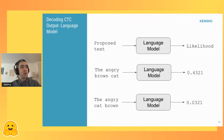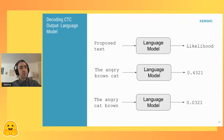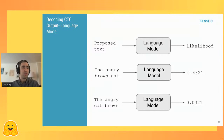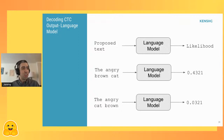An n-gram model is a probabilistic model where, given some sequence of words of size n minus one, we predict what the nth word is. This can identify improbable shorter sequences of text. For example, the English phrase 'the angry brown cat' sounds like natural English and gets a high score — say 0.4. But 'the angry cat brown' sounds less natural, probably gets a lower score. It's a way to take any text and try to score it.